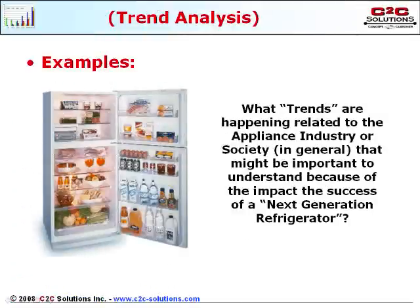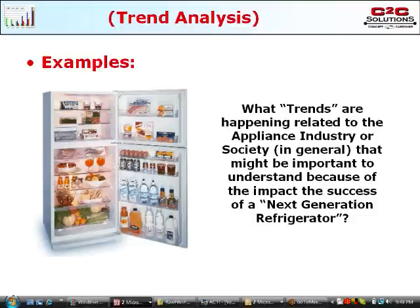In trend analysis, we're identifying trends that are shaping the future. As an example, if you were in the appliance industry designing a next-generation refrigerator, the development team must identify what trends are happening — directly or indirectly related to the appliance industry or society in general — that may determine the product's success or failure. Examples may include food packaging types, food type, family size, styling themes for interiors, kitchen size, the environmental movement, design for assembly, design for disassembly, energy usage, aging population, mass exclusivity, etc.